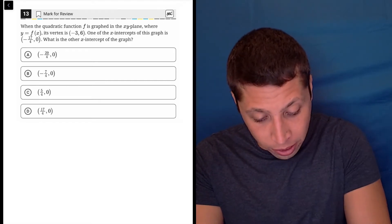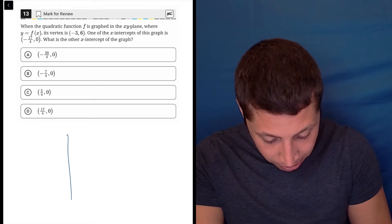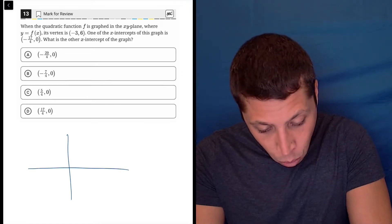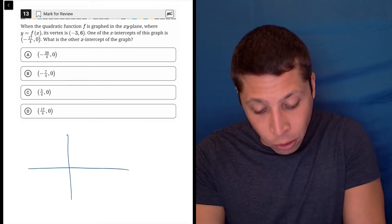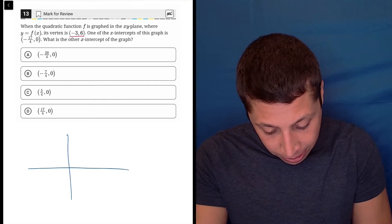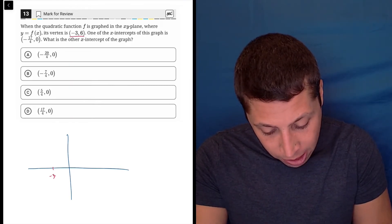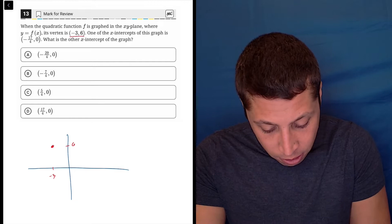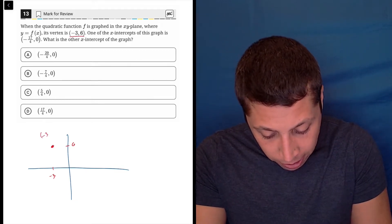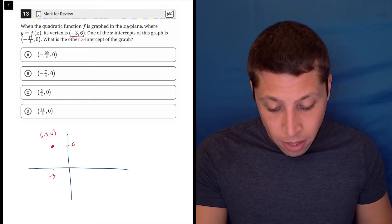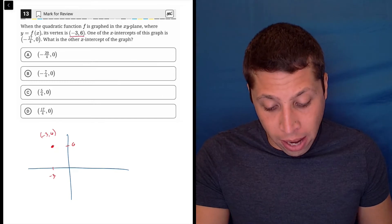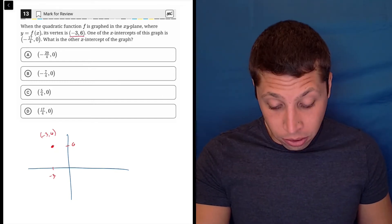So let's just draw a quick set of axes here. What do we know about this parabola? Its vertex is negative three, six. So here's negative three and here's six. I'm just doing a rough version, negative three, six. And one of the x-intercepts of this graph is negative 17 fourths, zero.